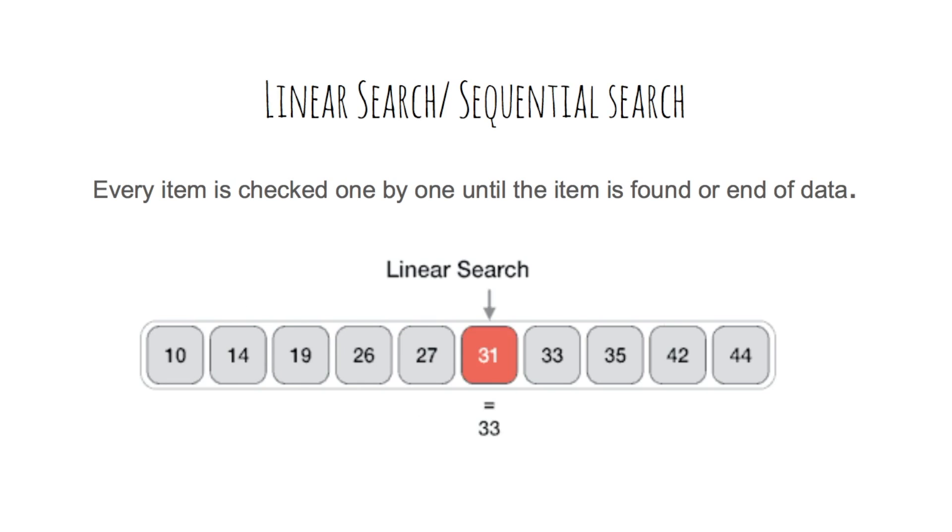Linear search is a very simple searching algorithm. In this type of search, a sequential search is made over all items one by one. Every item is checked, and if a match is found then that particular item is returned, otherwise the search continues till the end of the data collection.